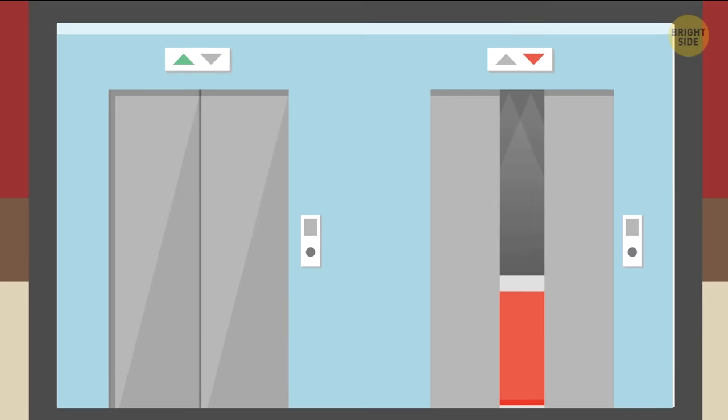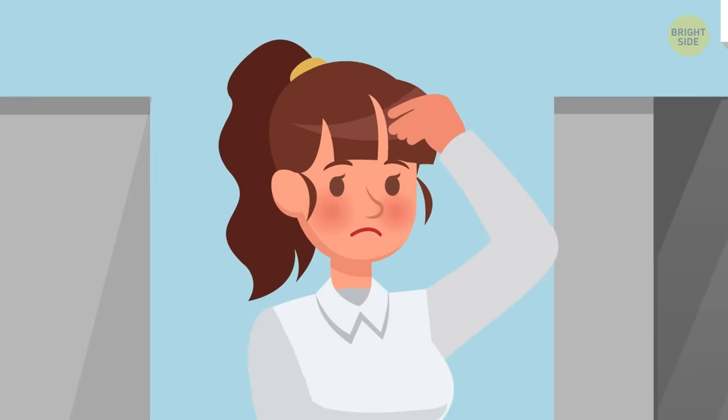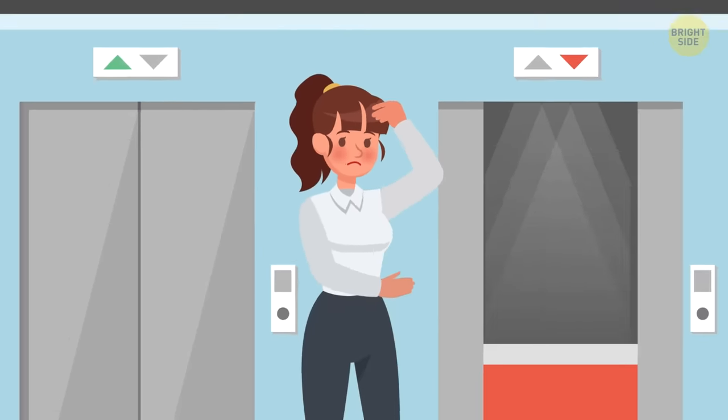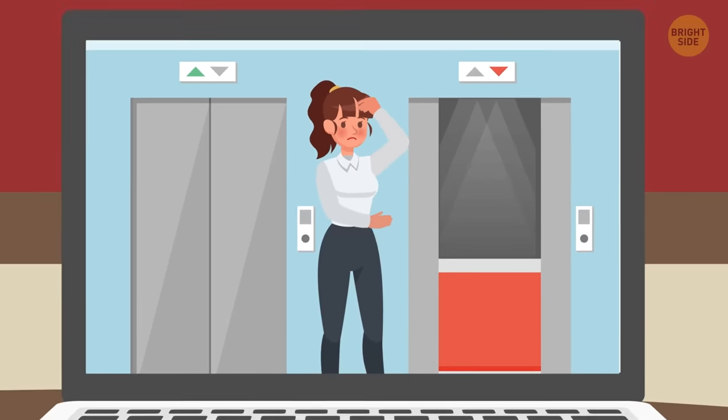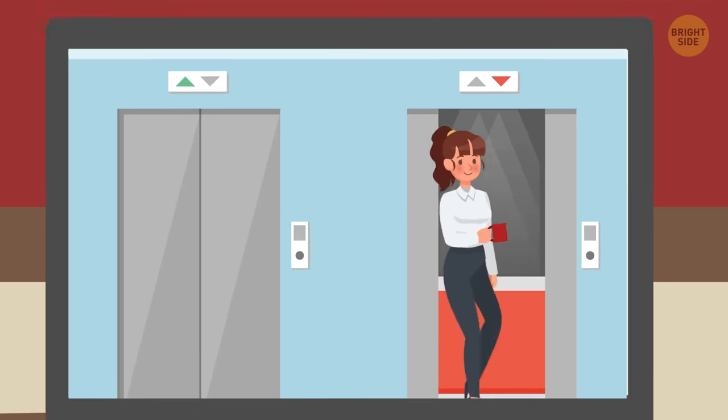Elevators ding when they're at your floor to inform you about their arrival. If you listen carefully, though, you might notice that some elevators produce a different number of dings. Usually, one ding means the elevator is going up, and two dings that it's traveling down.